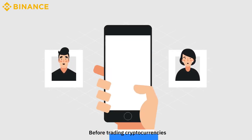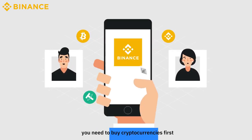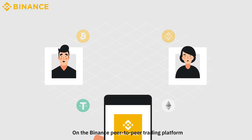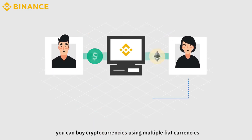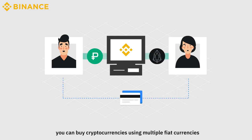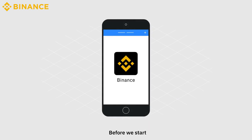Before trading cryptocurrencies, you need to buy cryptocurrencies first. On the Binance Peer-to-Peer Trading Platform, you can buy cryptocurrencies using multiple fiat currencies in various payment methods. It's super simple.